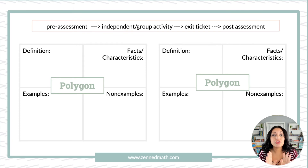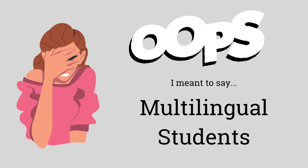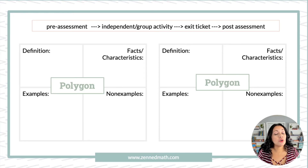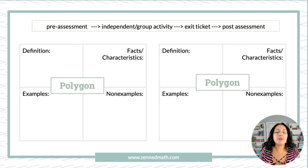Frayer Models are good for all students — and this really bothers me. Oftentimes when we use Frayer Models, we give them only to kids we think need support. Emergent bilinguals and English language learners do need vocabulary support, so Frayer Models are excellent for them. However, it's good for the rest of the class too. I hate that we single out rich activities and pick and choose which students to give them to. This is a rich activity — anyone and everyone can benefit from it. Give it to everyone.